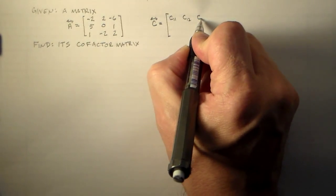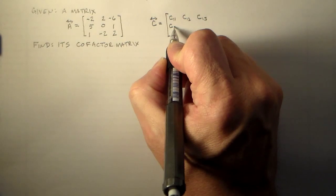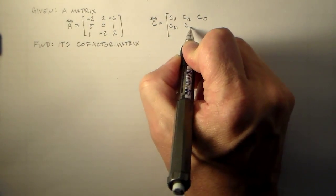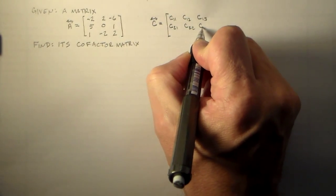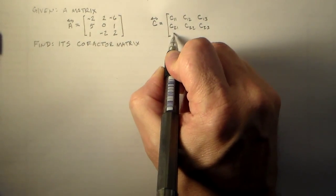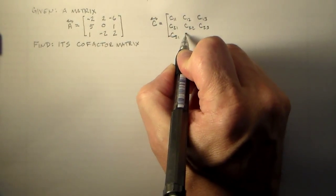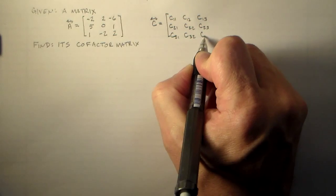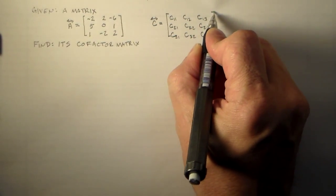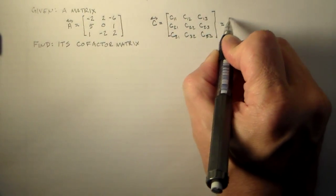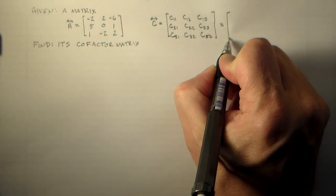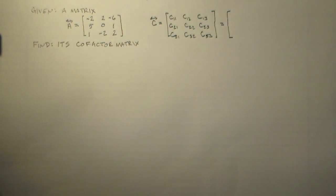And so that means we need to find the C11, C12, C13, C21, C22, C23, C31, C32, C33. And so we're just going to go through and fill this in, doing each one of these different cofactors one at a time.